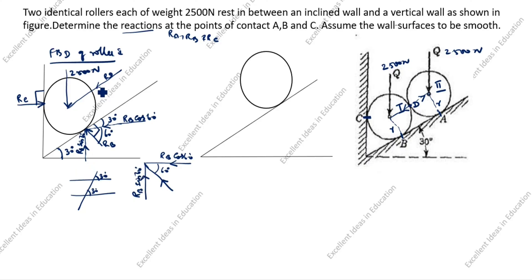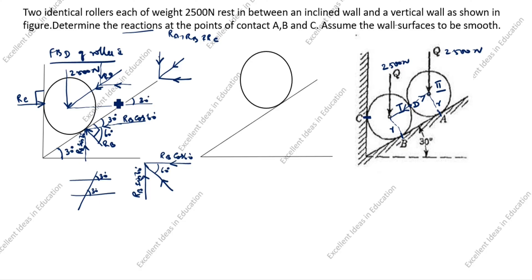Similarly, we resolve the inclined force Rd. The arrow direction gives a horizontal component of Rd cos 30° and a vertical component of Rd sin 30°. The angle is 30 degrees because this line is parallel to the inclined wall at 30 degrees. This completes the free body diagram of Roller 1.